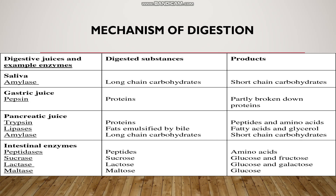Pepsinogen is the protein-digesting enzyme and it is present in an inactive form. Pepsinogen is activated with the help of hydrochloric acid. Hydrochloric acid activates pepsinogen to pepsin, and it can also kill microorganisms. Mucus present in the gastric juice protects the inner lining of the stomach from the action of pepsin. No carbohydrate digestion takes place in the stomach. After digestion of proteins, the food then reaches the duodenum, which is the first part of the small intestine.